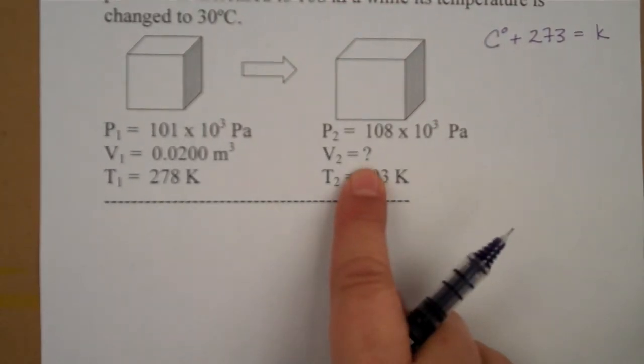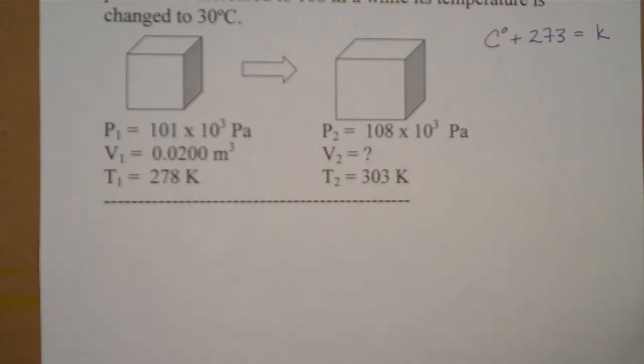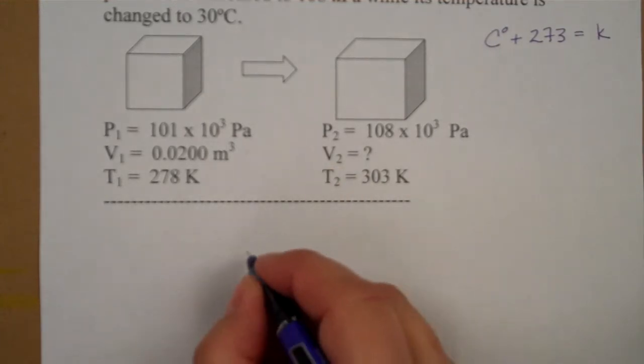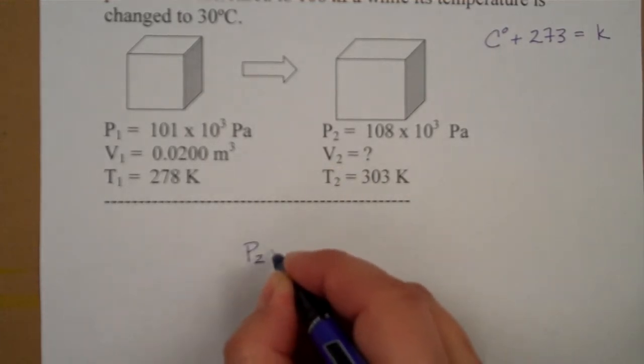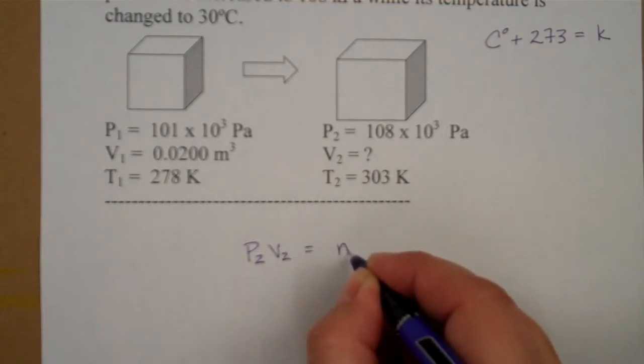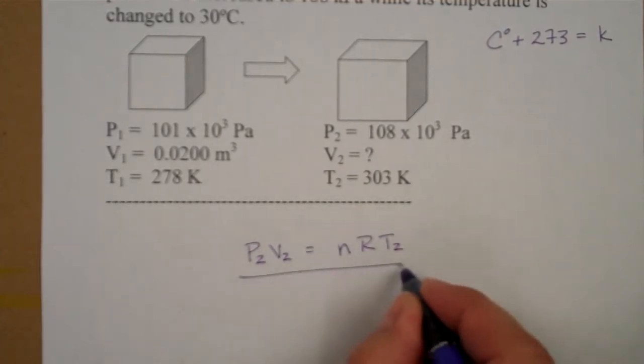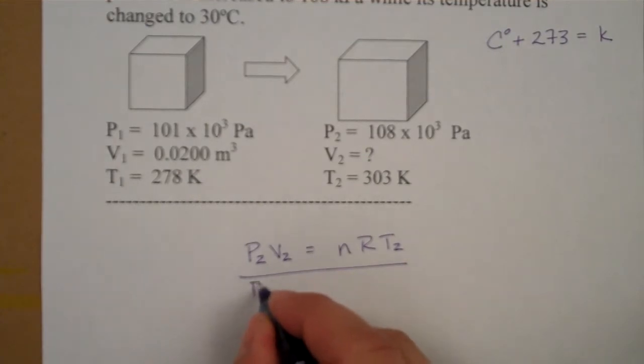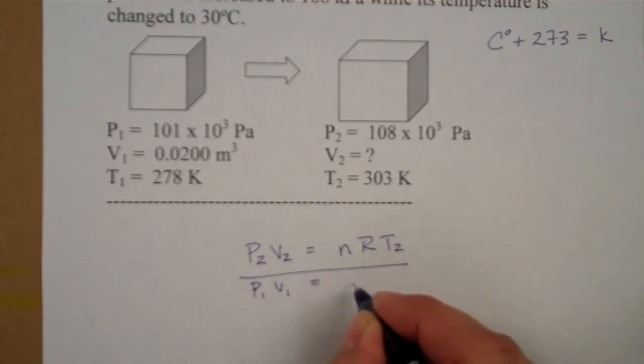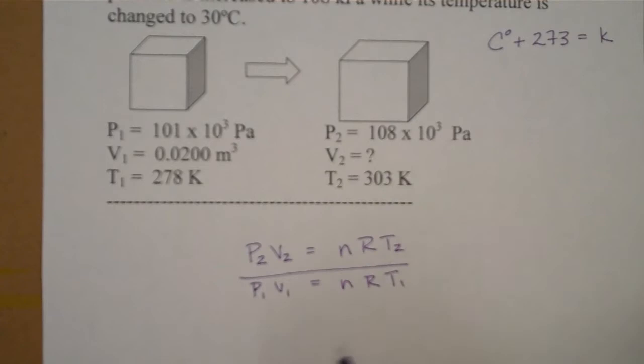In this case, volume is our unknown and that's V2. Typically my unknown I'm going to put on the top, so I'll put P2V2 equals NRT2 and then I'm going to divide by my initial conditions. P1V1 equals NRT1.